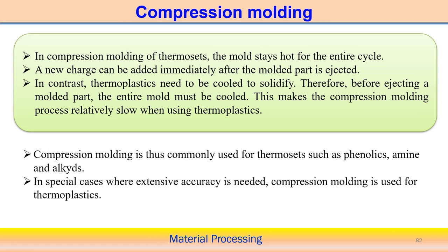Thermoset plastics such as phenolics and amines are commonly used in compression molding. In very special cases where extensive accuracy is needed, compression molding can also be used for thermoplastic polymers. However, compression molding is most commonly used as a manufacturing technique for thermoset polymer materials.